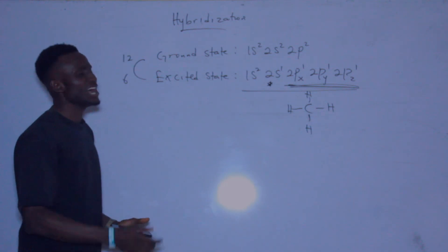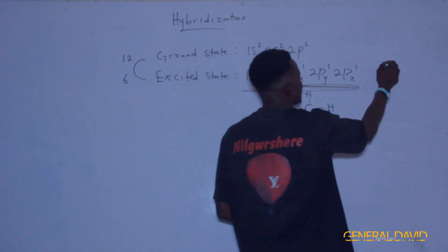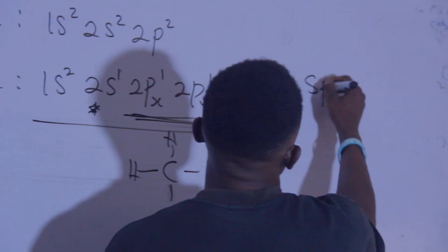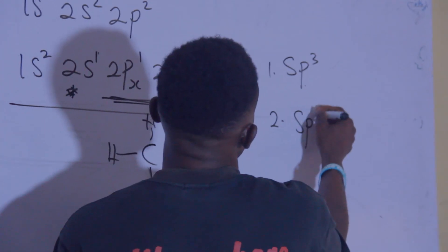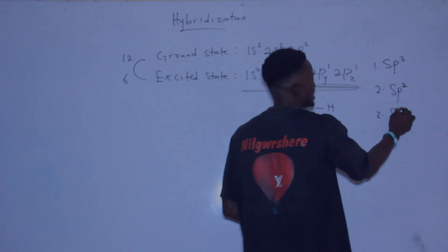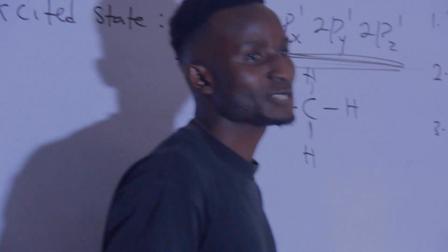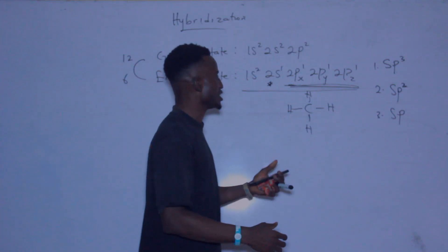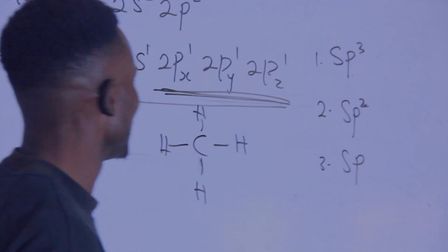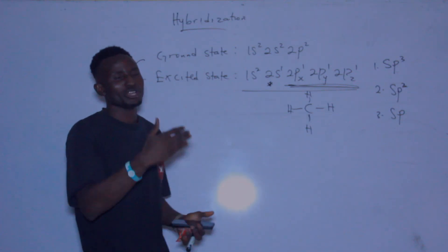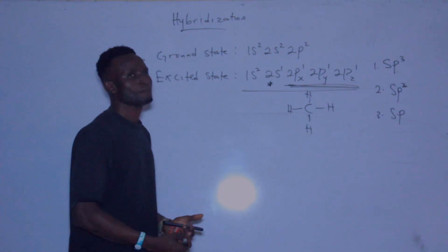Now we have types of hybridization. The first is sp³ hybridization, the second is sp² hybridization, and the third is sp hybridization. Let me explain these before going into each one after the other.